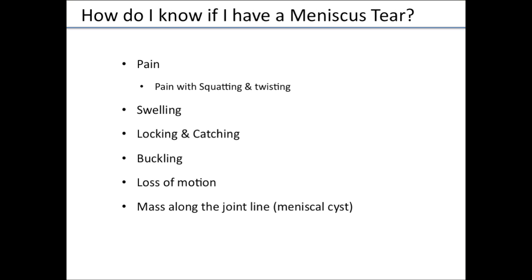How do you know if you have a meniscus tear? Some of the things that help include pain — very often patients report pain with squatting and twisting activities. Interestingly, many patients are able to run and walk without pain, but twisting and squatting causes pain. Swelling is another sign. Locking or catching, buckling — sometimes the torn fragment gets caught in the knee and causes it to buckle, which doesn't always mean there's an ACL tear. Many patients lose some motion, particularly flexion, as tears are often in the posterior portion of the knee. In some cases, people can even develop a small cyst along the joint line from fluid working its way through the tear.